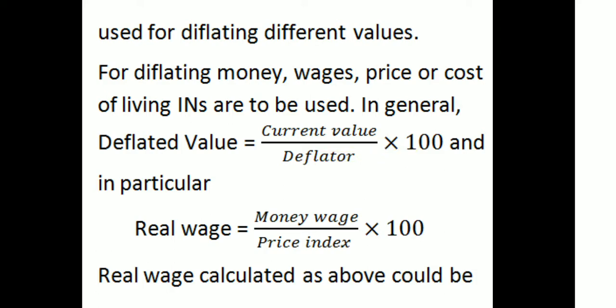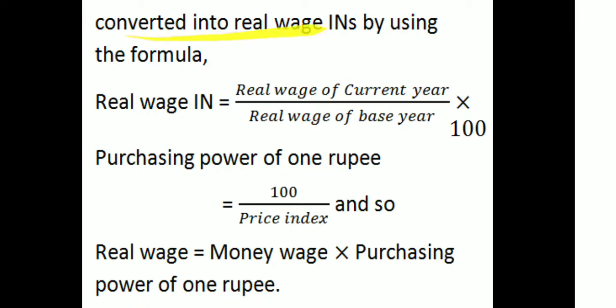In particular, real wage is equal to money wage divided by price index, into 100. Real wage calculated as above could be converted into a real wage index number using the formula: real wage index number equals real wage of current year divided by real wage of base year, into 100.